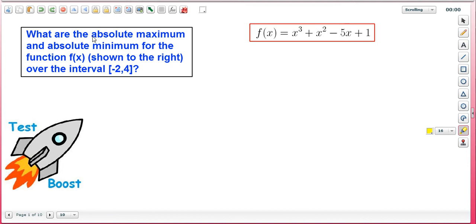What is the absolute maximum and absolute minimum for the function f of x, which is shown here in the red box on the right, over the interval x equals negative 2 to x equals 4?